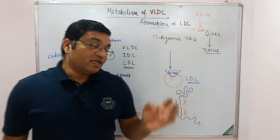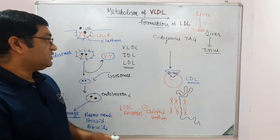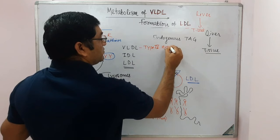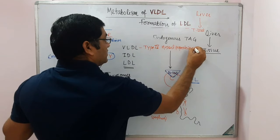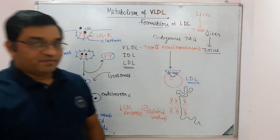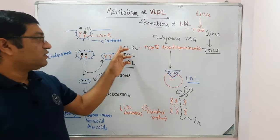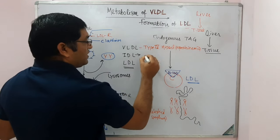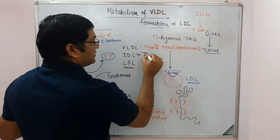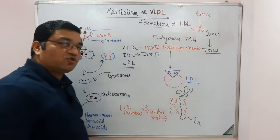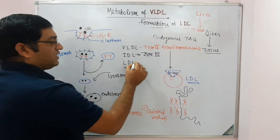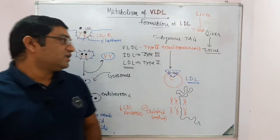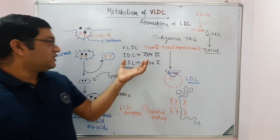Three disorders are related to these lipoproteins. VLDL is related to type 4 hyperlipoproteinemia, also known as hypertriglyceridemia. IDL is related to type 3 hyperlipoproteinemia, also known as dysbetalipoproteinemia. LDL is related to type 2 hyperlipoproteinemia, which involves a defect in the LDL receptor.